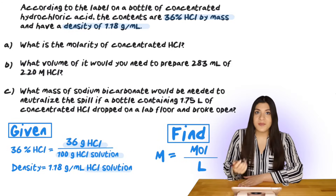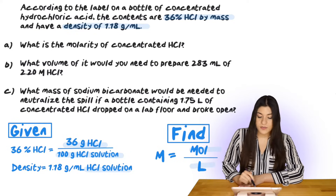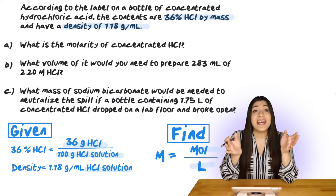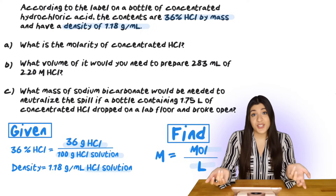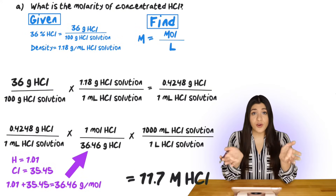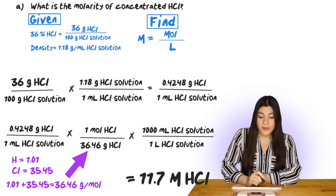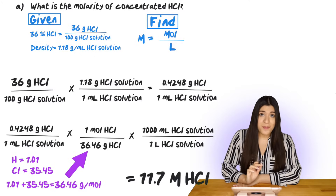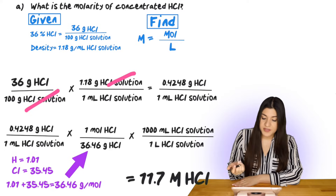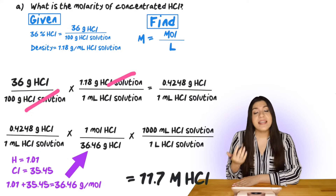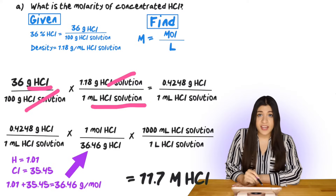We're asked to find the molarity, and remember molarity is moles divided by liters. So somehow we're going to get to moles of HCl and divide that by the liters of our HCl solution. Taking that 36 grams per every 100 grams of HCl solution, we multiply by the density provided because our grams of HCl and grams of HCl solution cancel, giving us grams of HCl divided by milliliters of HCl solution.